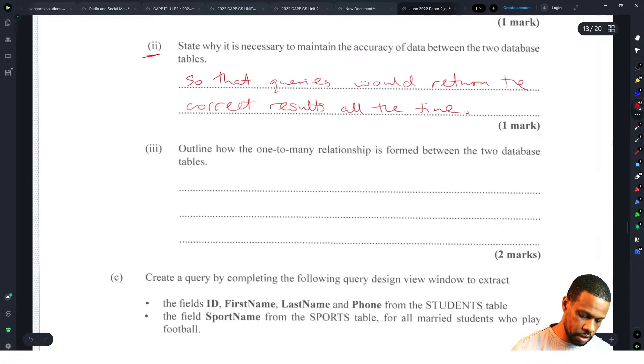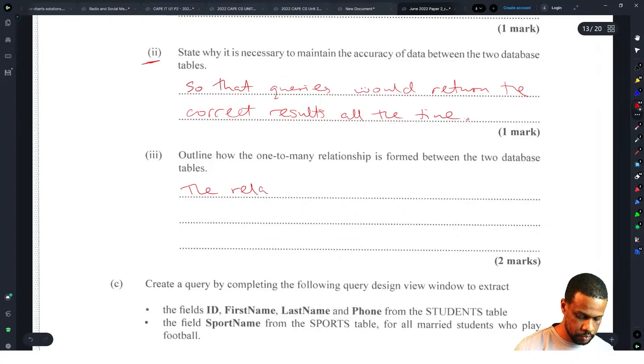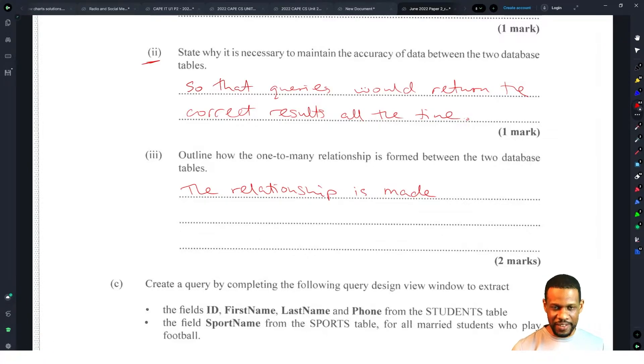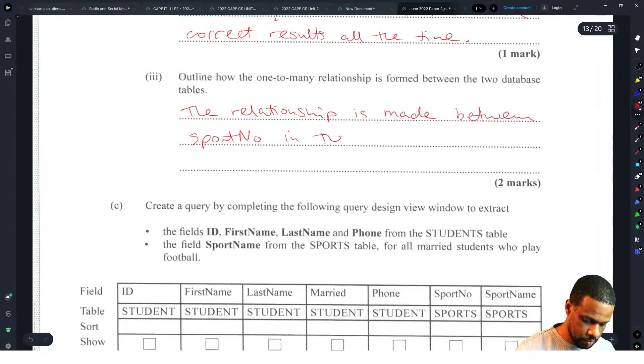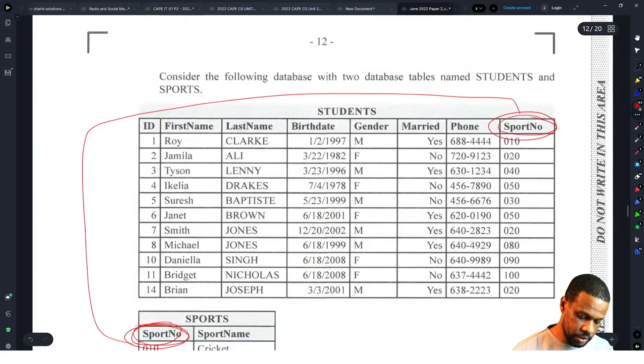So the relationship is made between sport number in the sports table and sport number in the students table.